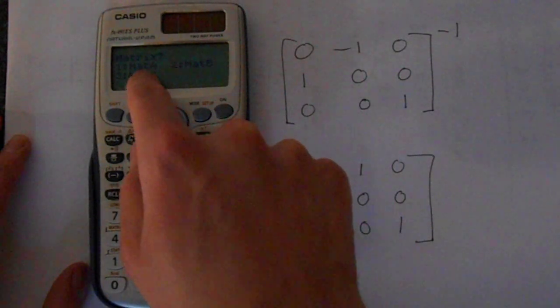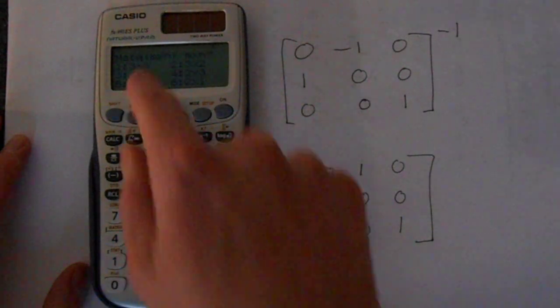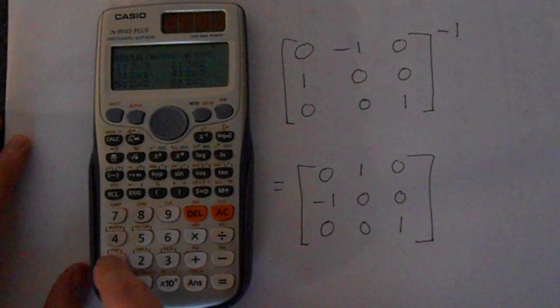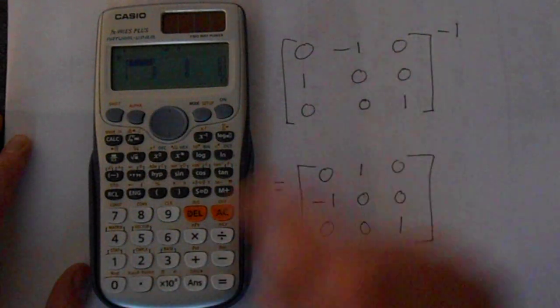Then we want to edit matrix A, so press 1, and we'll make it a 3 by 3. This is a 3 by 3. So let's enter this matrix here.